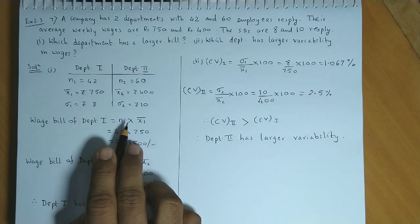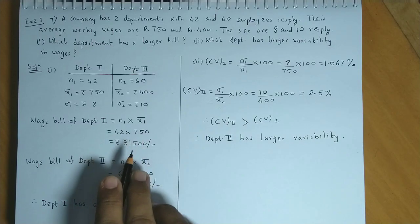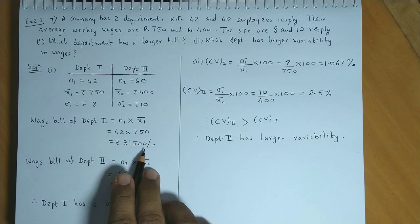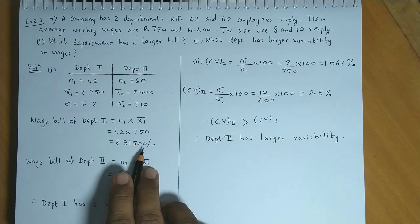That's 42 times 750, which equals 31,500. So Department 1's wage bill is 31,500 rupees.